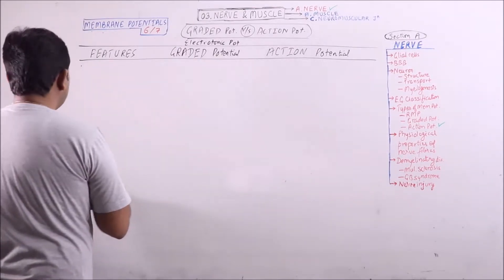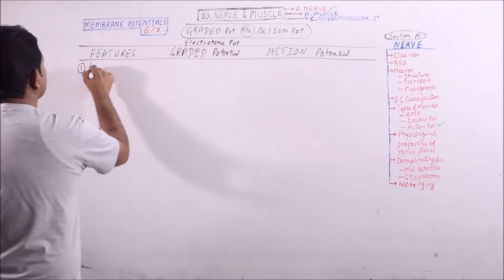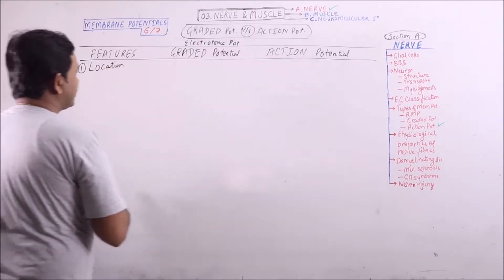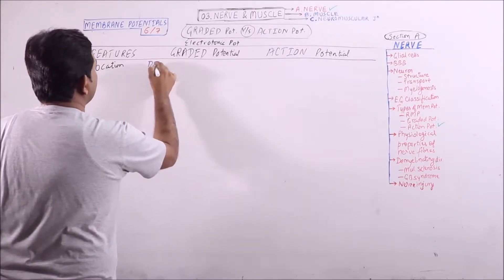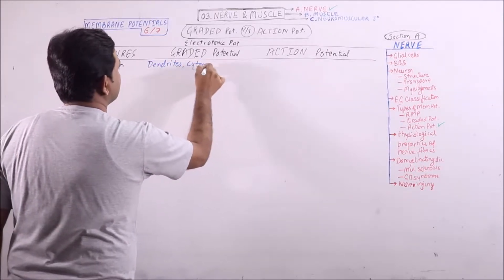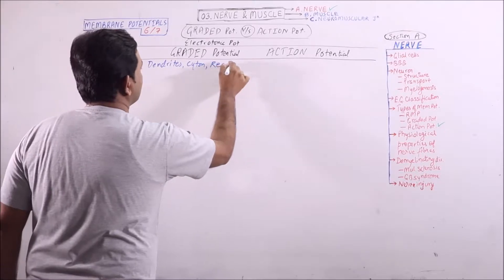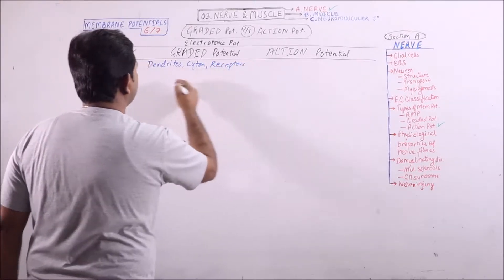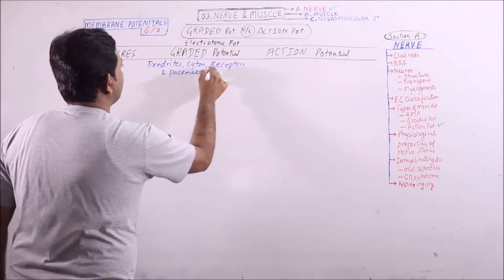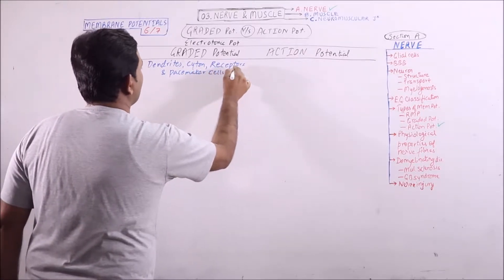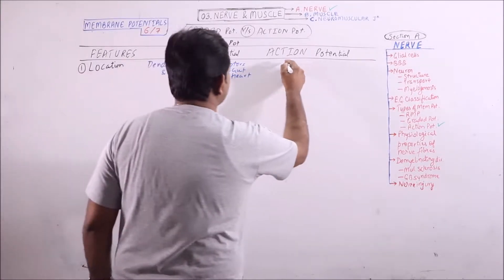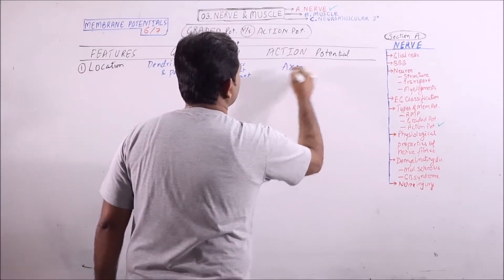First of all, we will take the location. Graded potential can be observed at dendrites, cytome, receptors, and pacemaker cells of gut and heart. While action potential is observed only at the axon.